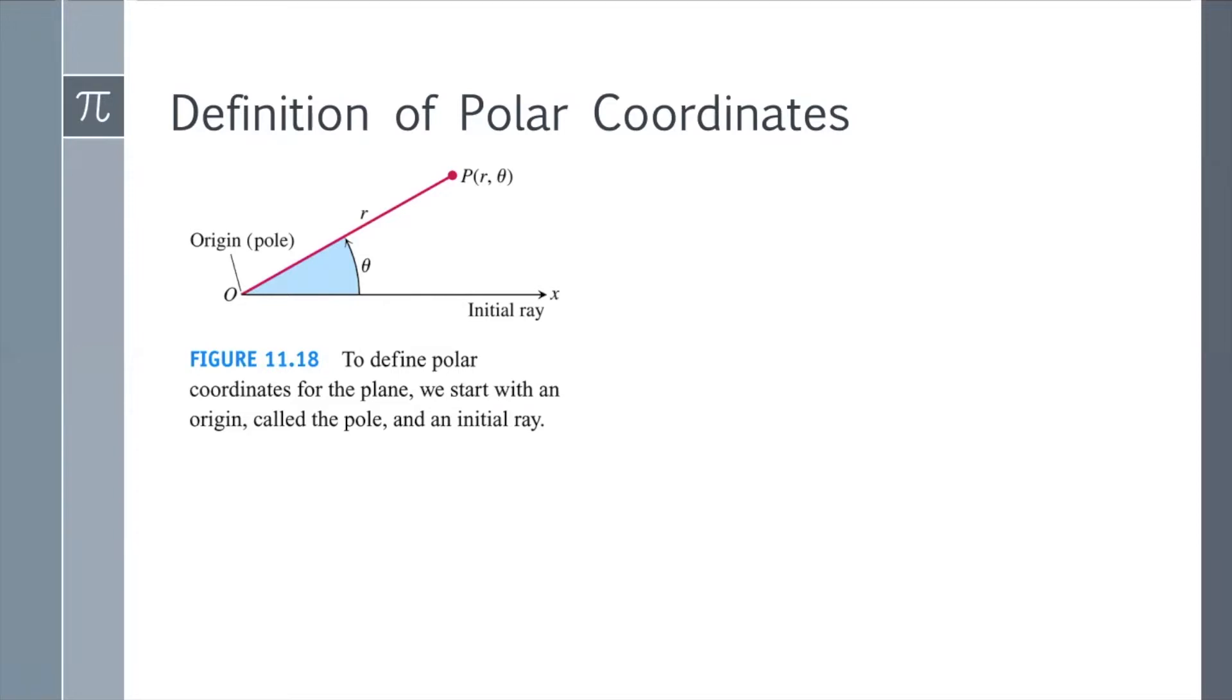So polar coordinates, as you hopefully know, are great for a lot of things. One slightly annoying thing about them is they are not unique. And there are two reasons for that. First of all, you have a bunch of coterminal angles.